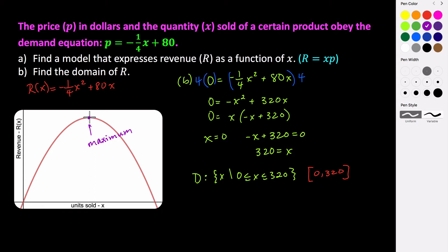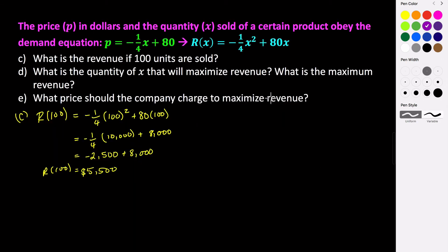This is going to happen at the vertex of our quadratic function. So we need to find the X value of our vertex — that will tell us how many units sold maximizes our revenue. To get the actual revenue, we just plug that value back into our function. For part D, we use X equals negative B over 2A to figure out the X value of our vertex.